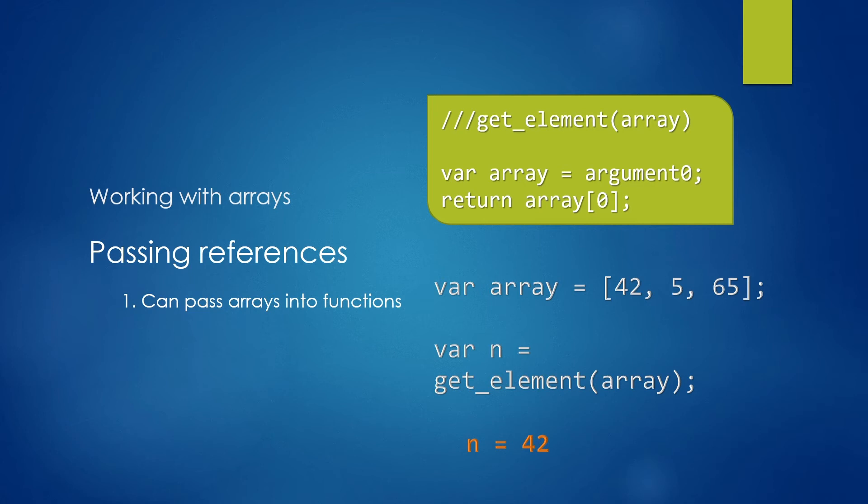We have a script named getElement, which takes the array variable. And all it does is return the first element in the array. And if we have a look below that, we see that we can create an array like usual, and then get our script getElement, which should return the first element. And it all seems to be working.